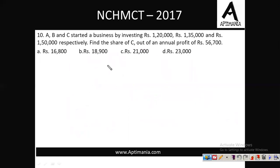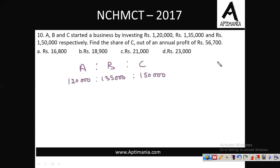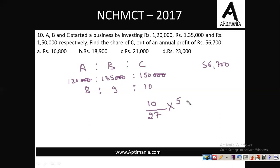Question number 10 based on partnership. A, B, C started a business investing rupees 1,20,000, 1,35,000 and 1,50,000 respectively. Find the share of C out of an annual profit of 56,700. Cancelling common factors, the ratio becomes 8:9:10. C owns 10 parts out of 10+9+8 = 27 parts. So C's share = (10/27) × 56,700 = 21,000 rupees. Option C.